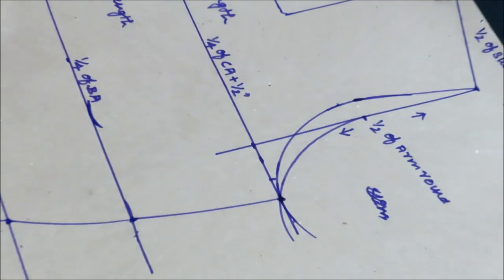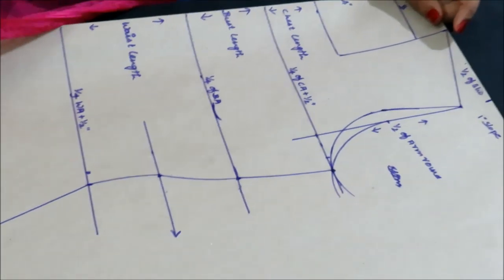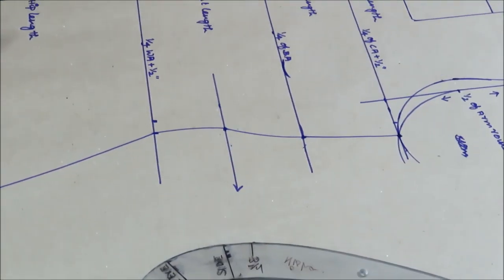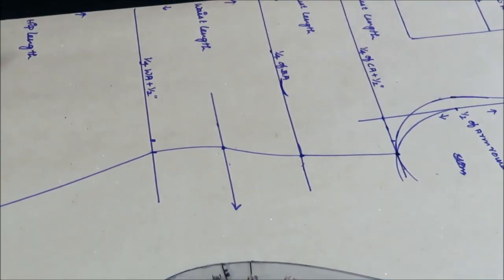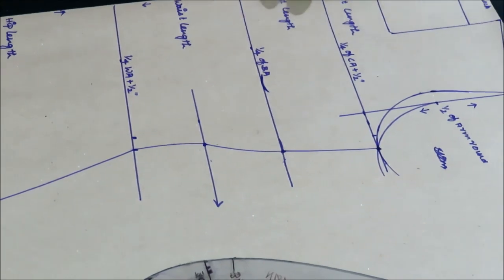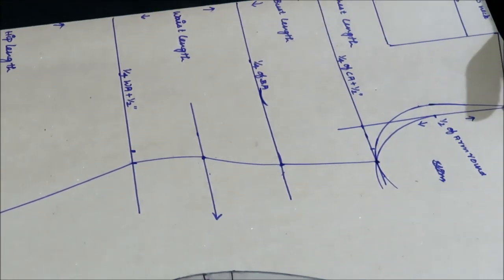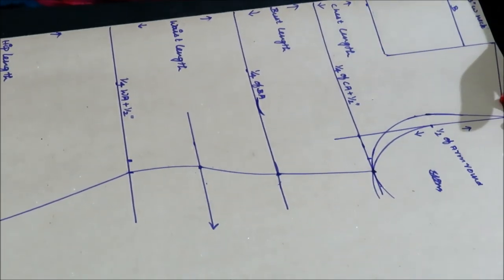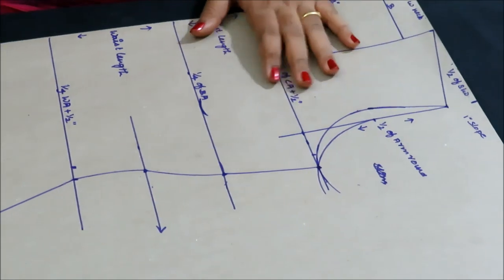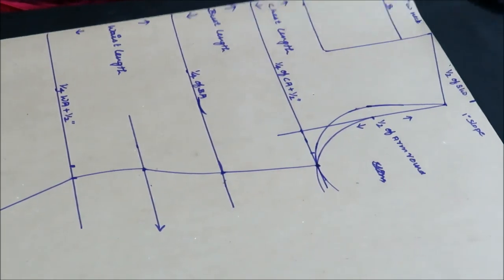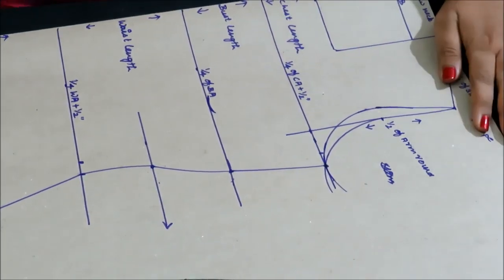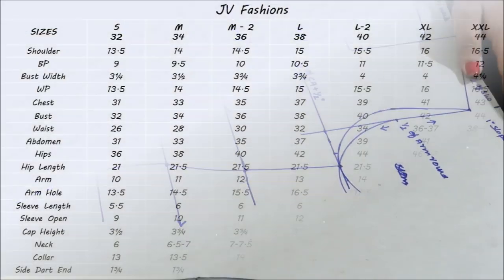So this is the basic drafting of the body. While you are going to keep the back neck deep, the shoulder slope will get decreased inside. In my next video, I will show you how to do the shoulder manipulation. Thank you.